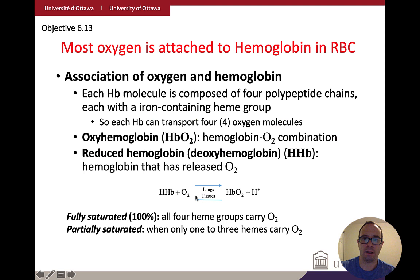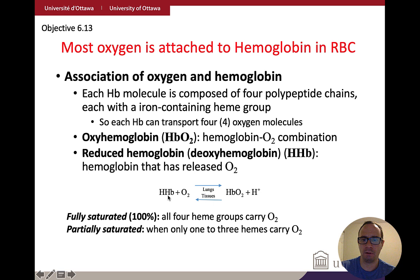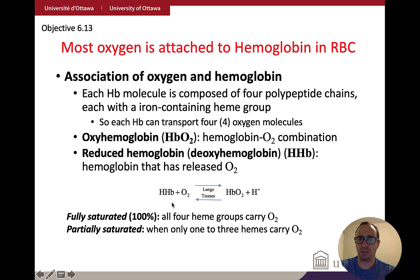When oxygen is bound to hemoglobin, we call it oxyhemoglobin. The equation shows reduced hemoglobin binding oxygen to form oxyhemoglobin, also producing a hydrogen ion — which can impact blood pH. In the lungs, the reaction goes forward — picking up oxygen. In the tissues, it goes in reverse — releasing oxygen. By the time hemoglobin reaches the tissues, we want that oxygen to be released.